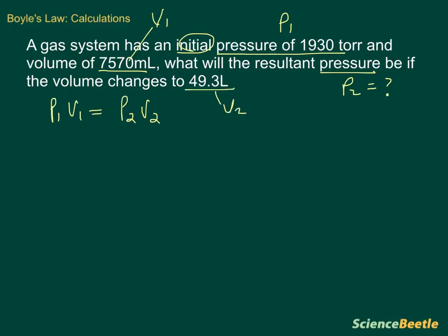So what we need to do is plug everything into the equation and we can solve for P2. P1 is 1930 and this is going to be in torr. That's the units for pressure. And multiply that times V1, which is 7570 milliliters. This equals P2. We're looking for this. And then our volume 2 is going to be 49.3 liters.